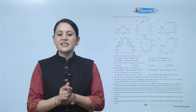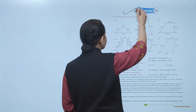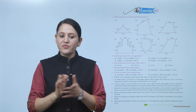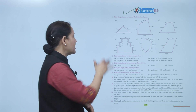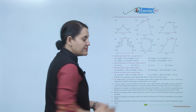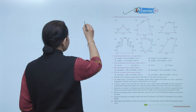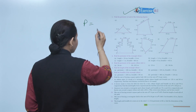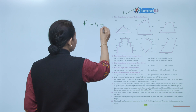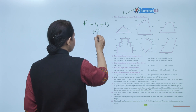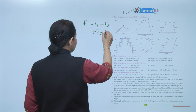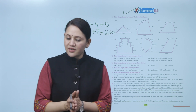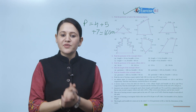Next is Exercise 10.1. Find the perimeter of each of the following figures. The first one is a triangle with sides four, seven, and five centimeters. Perimeter equals AB plus BC plus AC, that is four plus five plus seven, which equals 16 centimeters. That is the perimeter of the given figure. You have to practice all the questions of this exercise.